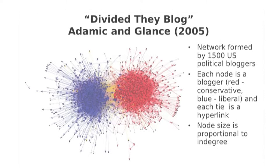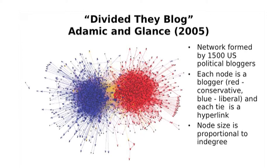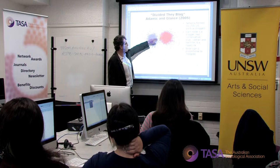Adamic and Glance collected data on 1,500 US political bloggers in 2004, leading up to the US presidential election. They did exactly what I did in the previous slide. They said, 'Okay, let's code these bloggers up according to whether they are conservative or liberal.' The conservatives are the ones in red and the liberals are in blue. And then they said, 'How do they connect to each other via hyperlinks?' And what they found was this.